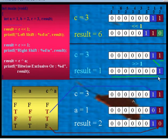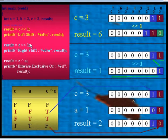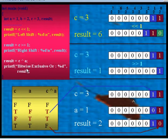The binary number 00000001 is the binary equivalent of the decimal number 1. Hence, after the right shift operation, the content of result will be 1.